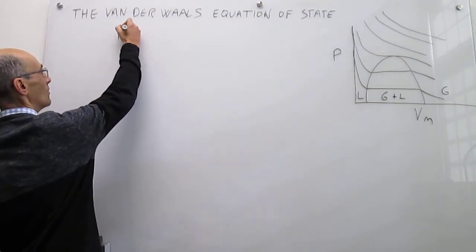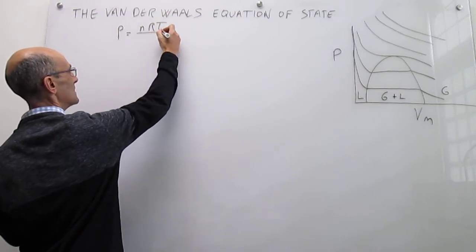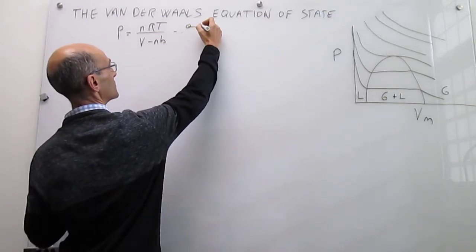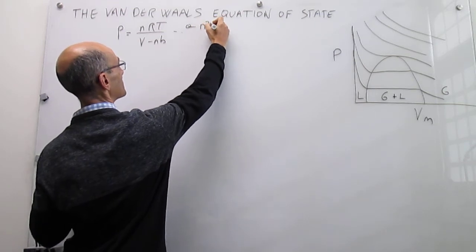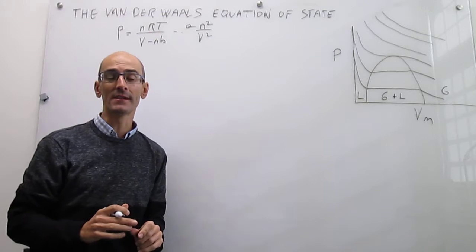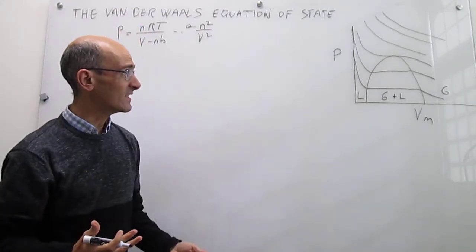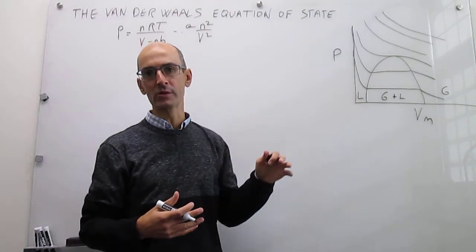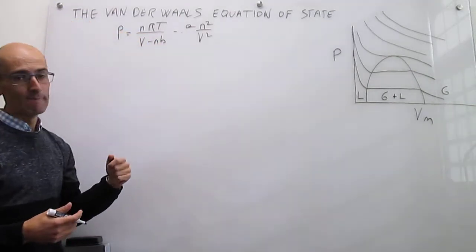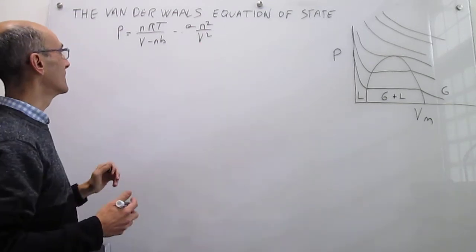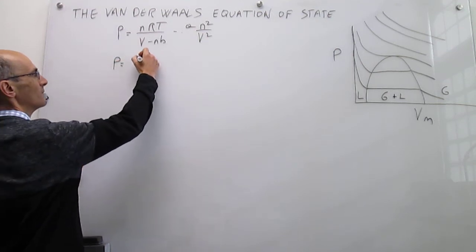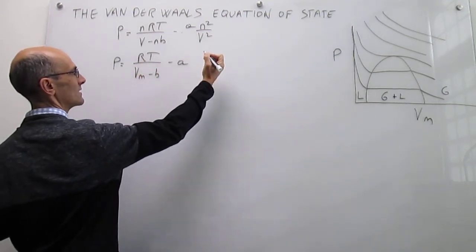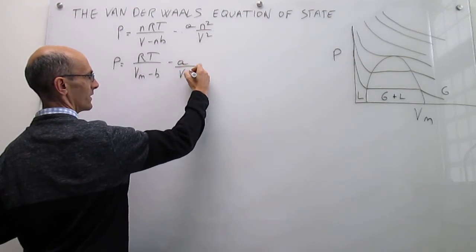First, we'll rewrite the Van der Waals Equation of State in two forms. The more commonly seen form, and then a better one — the molar form — which we'll use going forward. Since we're looking at the critical point in terms of molar volume, it's advantageous to divide through by the number of moles. In molar form the equation becomes: P = RT/(V̄ − b) − a/V̄², where V̄ is the molar volume.